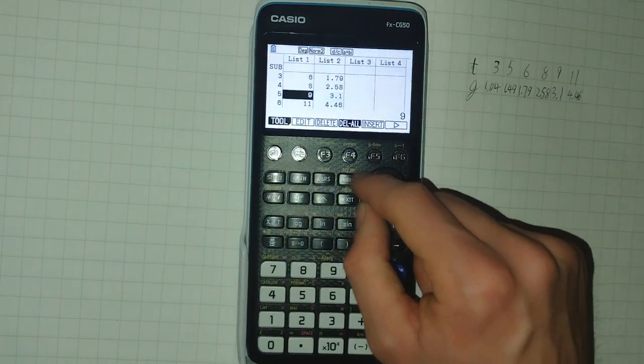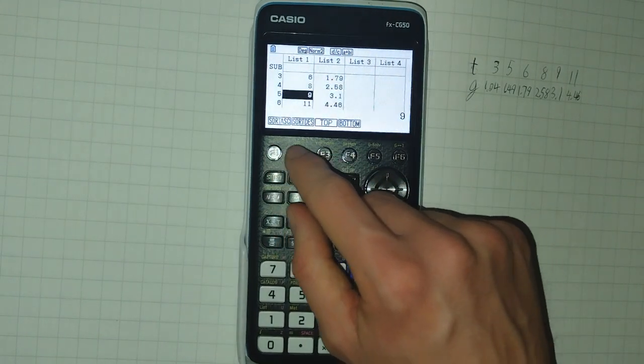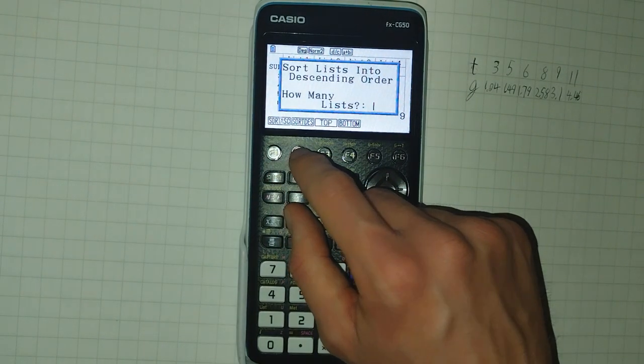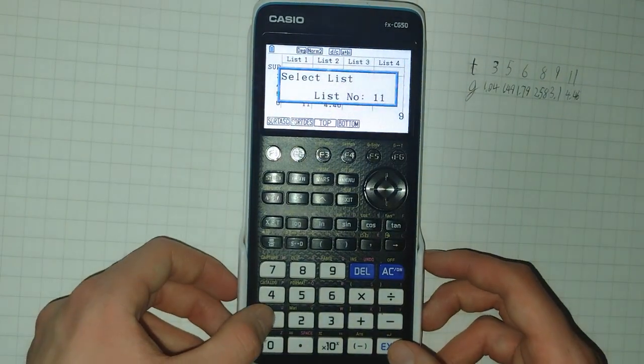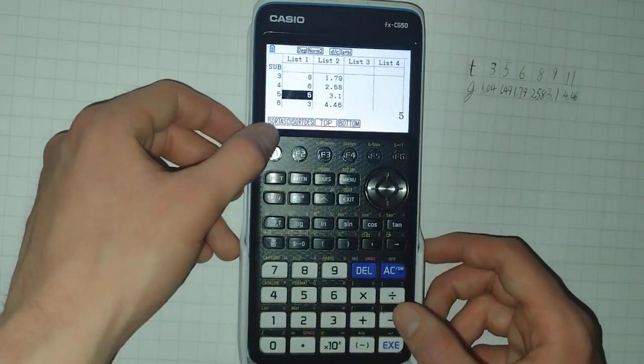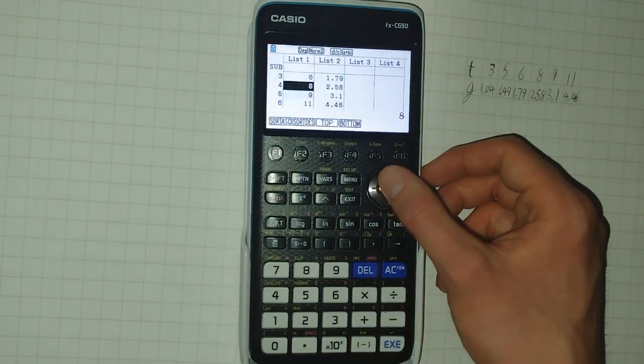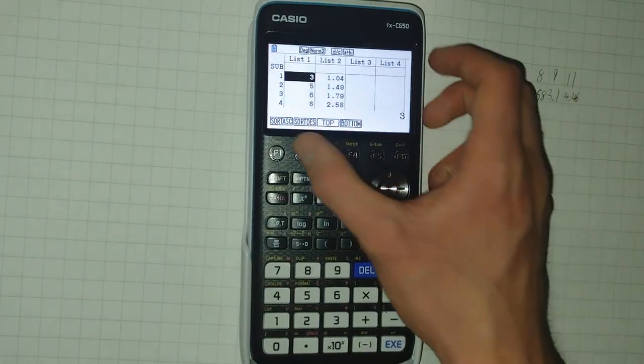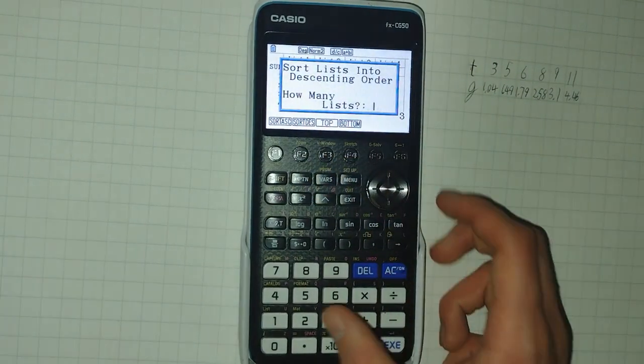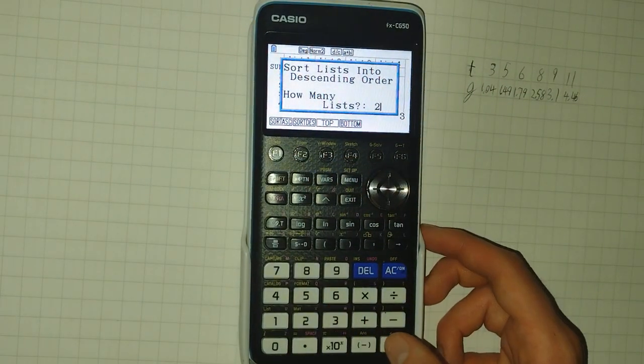Notice also that we can sort lists. So I can sort ascending list number one, and I can sort it ascending again. But notice that it asks how many lists I'd like to sort.